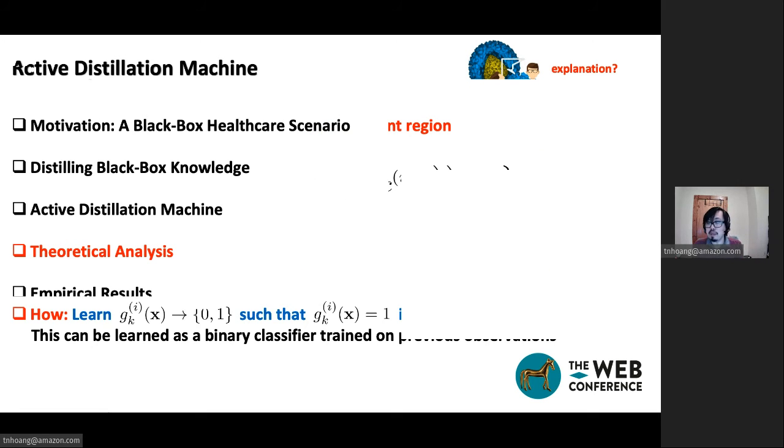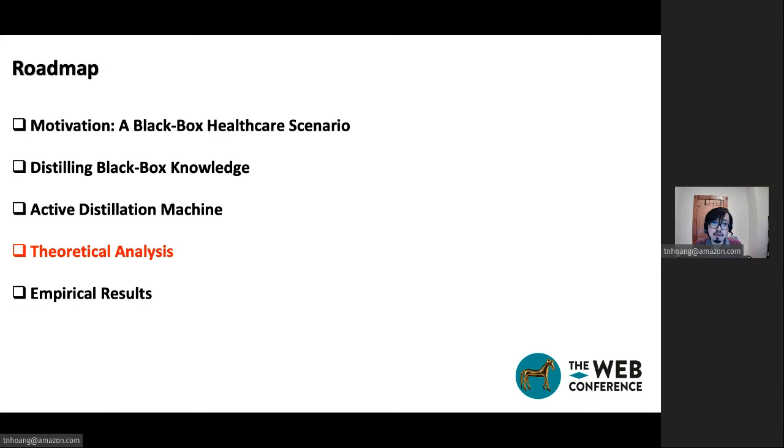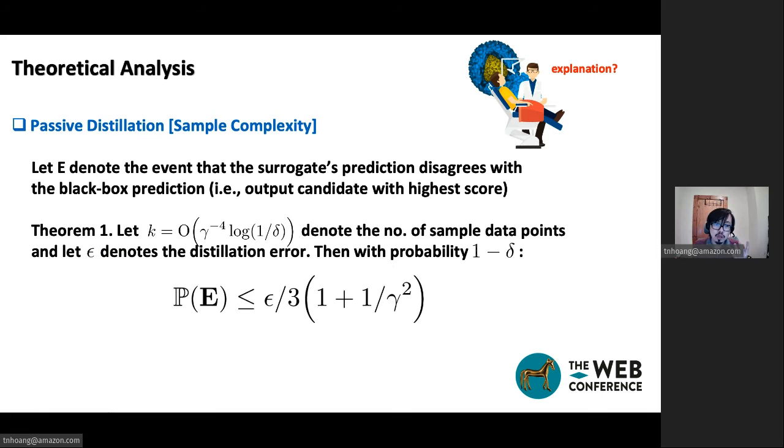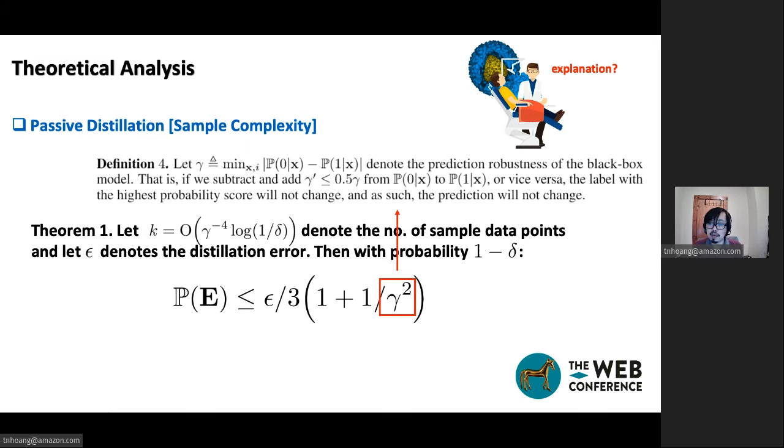And in the next part of the presentation, I will highlight several key results saying that if we want to upper bound the probability of disagreement between the surrogate and the cloud model by a certain function, depending on the distillation error and the robustness of the black-box model, then we need to incur a number of sample queries in the worst case. For passive distillation, the worst case complexity would be proportional to one over gamma to the power of four, where gamma, as I mentioned briefly just now, is the prediction robustness of the black-box model, which I define properly here.